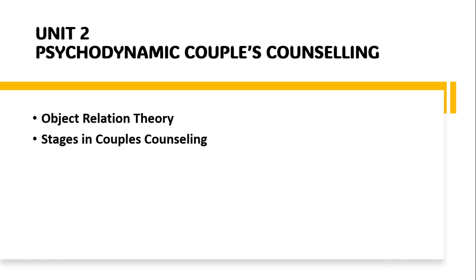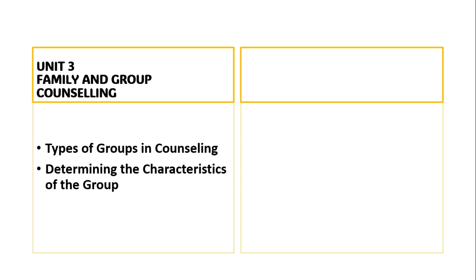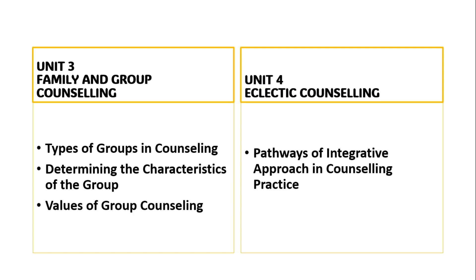Units 3 and 4 are of equal weightage, so you can study either of these units. From Unit 3: Types of Group in Counseling, Determining the Characteristics of the Group, Values of Group Counseling. And from Unit 4: Pathways of Integrative Approach in Counseling Practice, and Psychodrama.